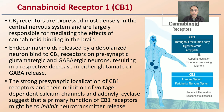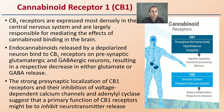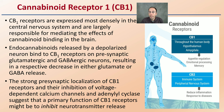The CB1 receptor is expressed most densely in the central nervous system and is largely responsible for mediating the effects of cannabinoid binding in the brain. There is a lot of depolarization going on, resulting in a decrease in either glutamate or GABA release — examples of neurotransmitters. Research suggests this receptor may play a role in inhibiting neurotransmitter release in general.